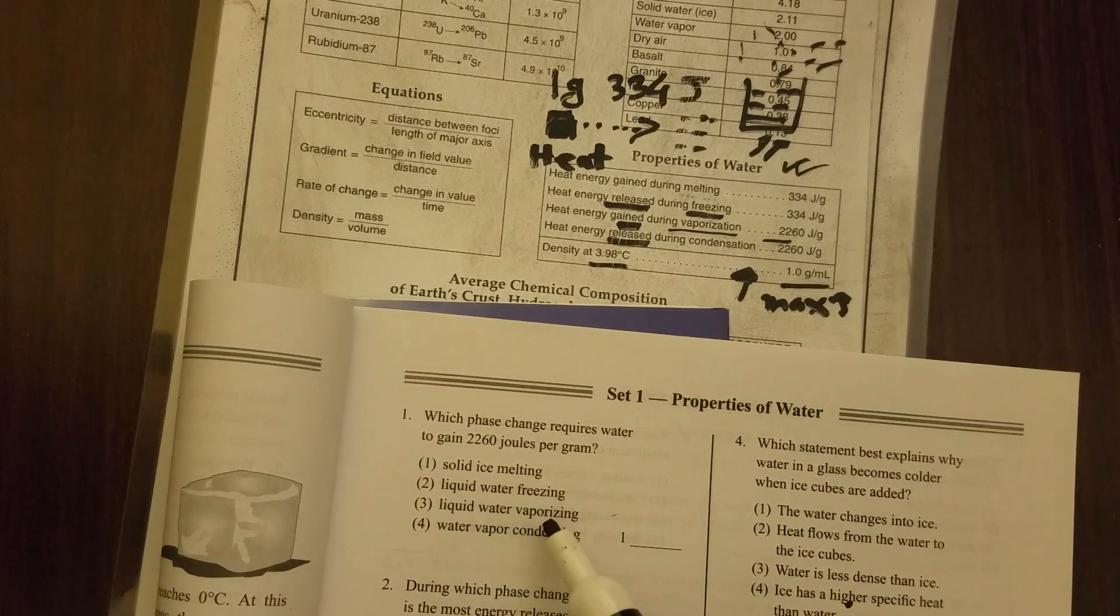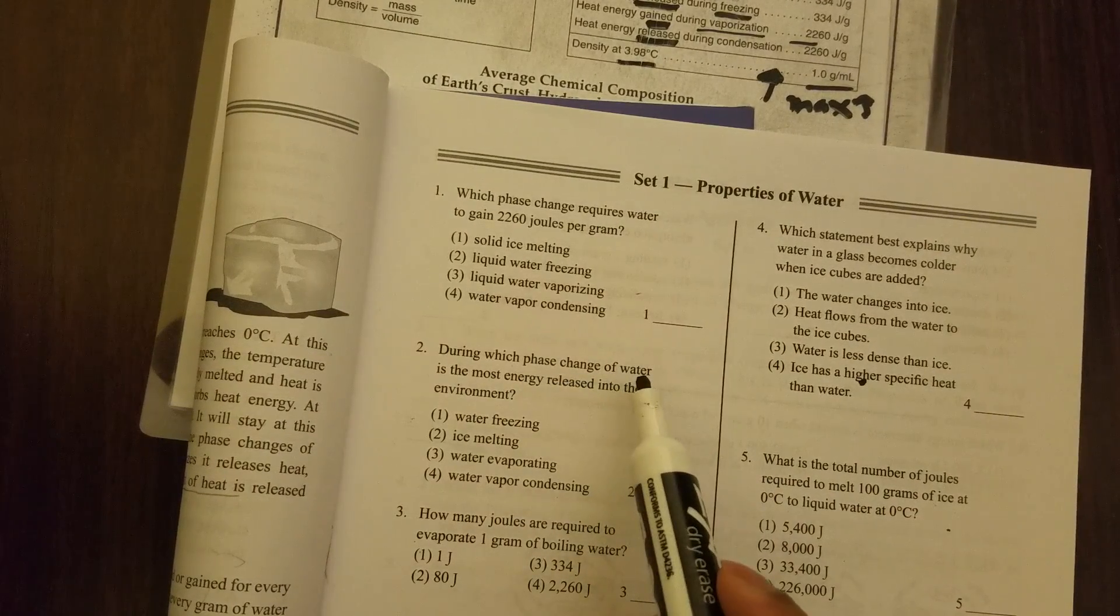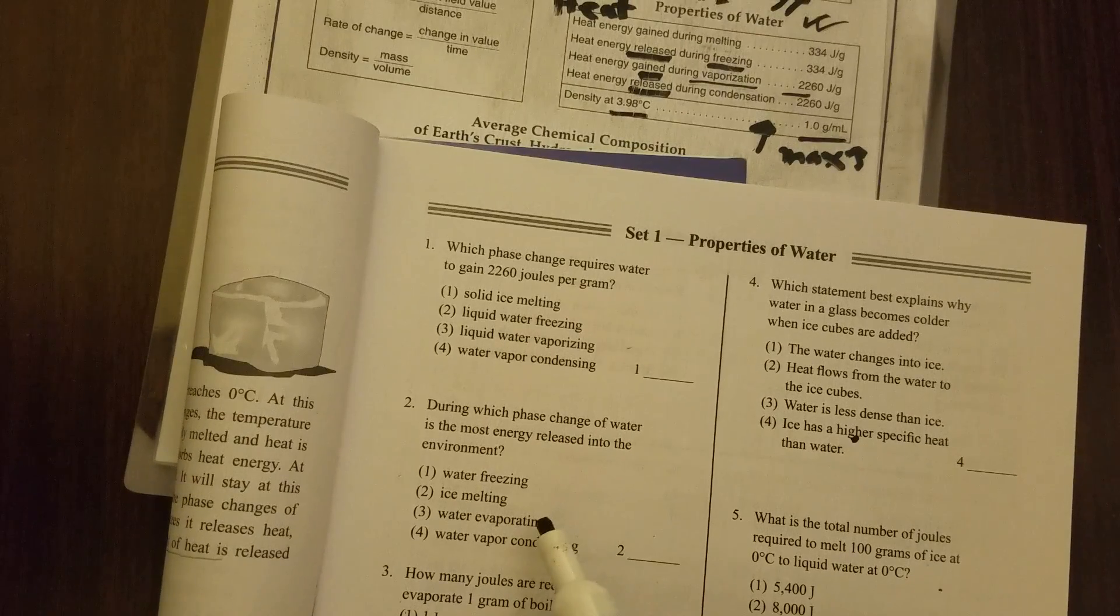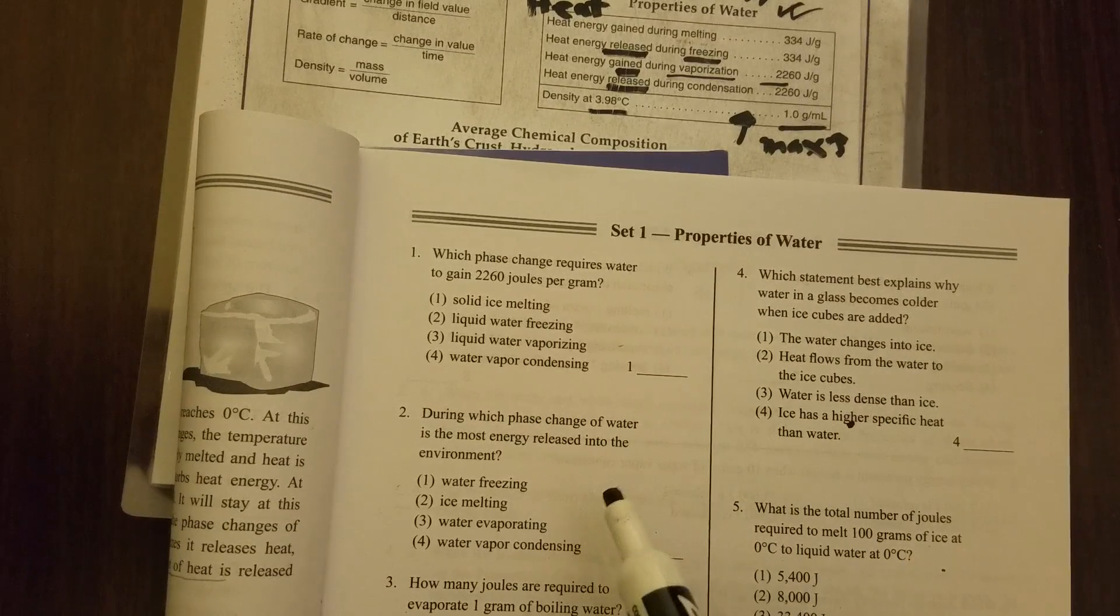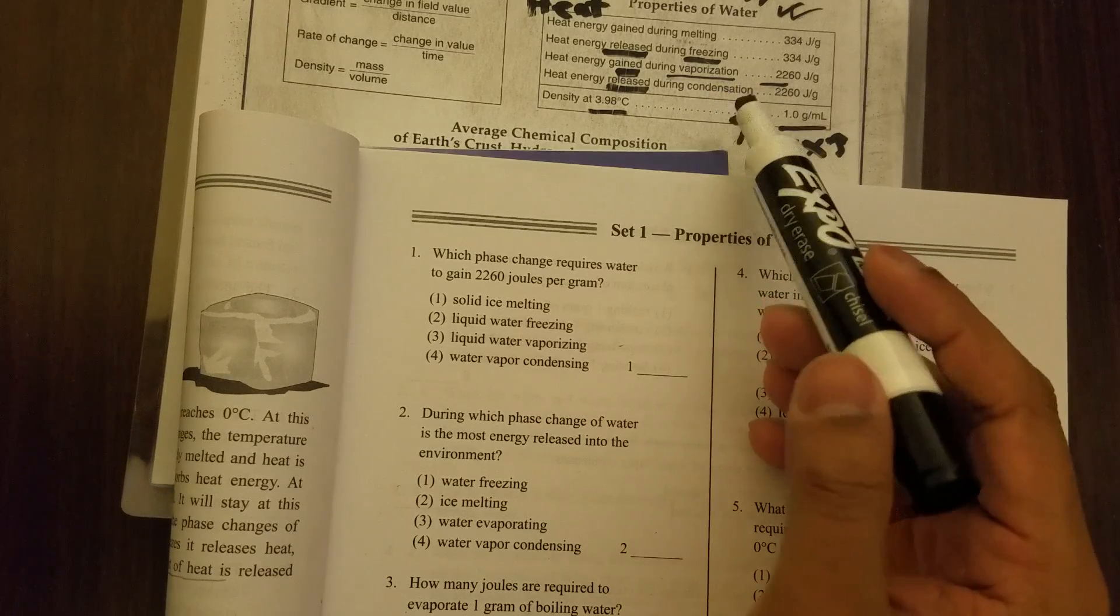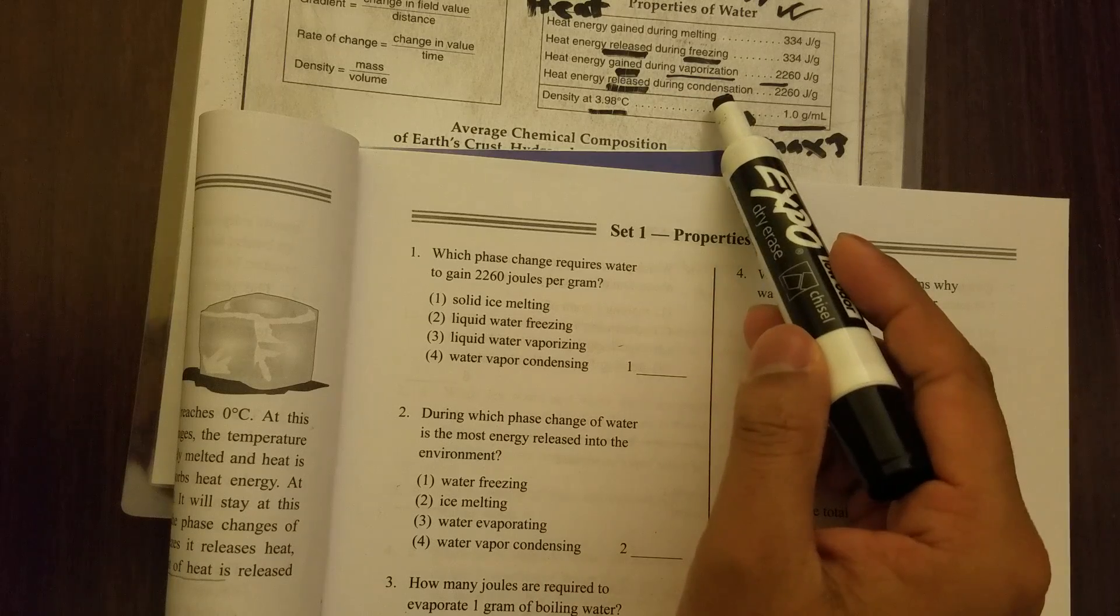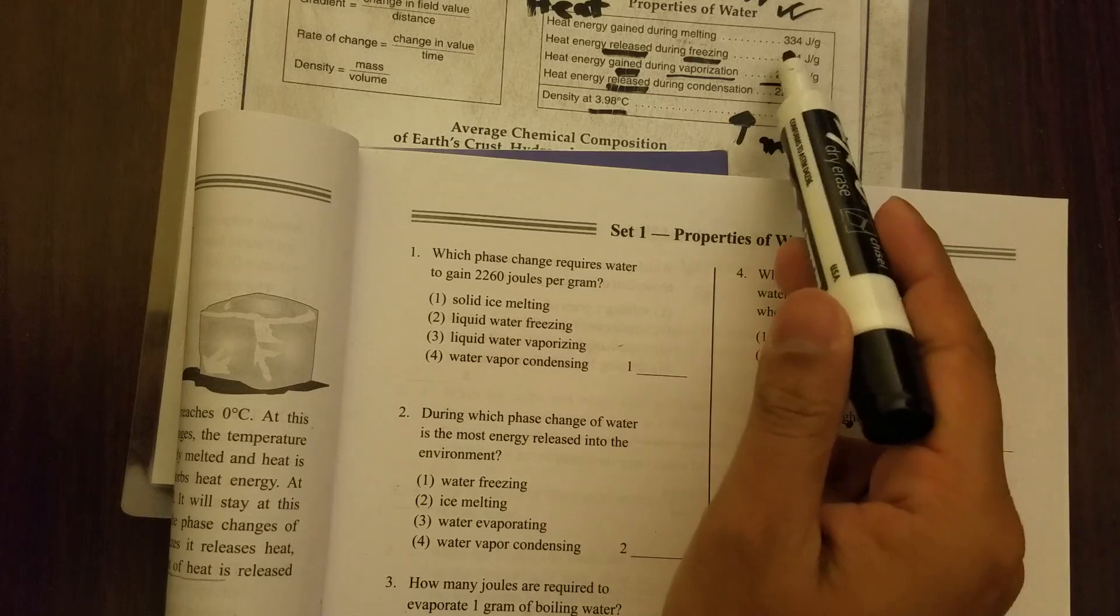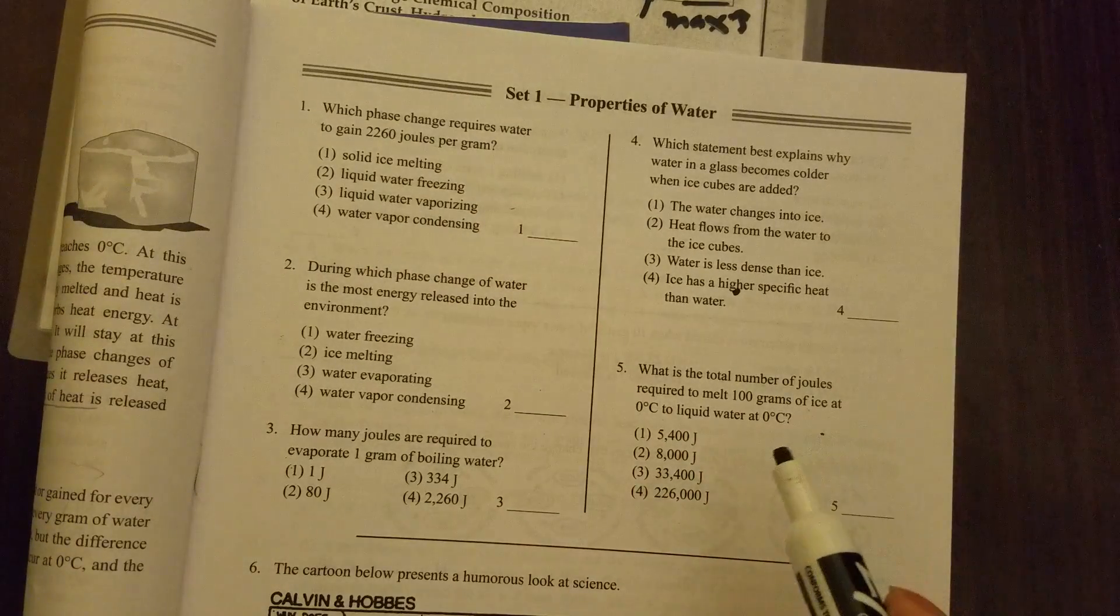Question number two: during which phase change of water is the most energy released into the environment? You are releasing energy to the environment and I want to find out which one is the max. I already know that if we are releasing energy, there are two - one is freezing, another is condensation. But condensation is releasing more, this is 2260 and this is only 334.